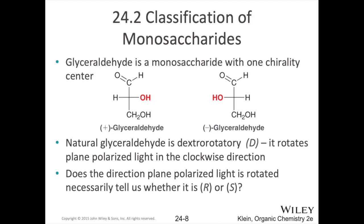The smallest monosaccharide with one chiral center is glyceraldehyde — it's a triose with three carbons. That one chiral carbon can have its alcohol group pointing right or pointing left. If the alcohol group is pointing to the right, that's the R designation; if it goes to the left, it's the S designation. We also distinguish between the two enantiomers of glyceraldehyde using a plus or minus designation, referring to how plane-polarized light is deflected.